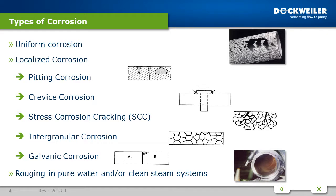The second type is crevice corrosion, which also occurs in neutral and acidic chloride solutions. The attack starts more easily in narrow crevices than on unshielded surfaces. So everywhere where you have a flange joint or something similar, this could happen in chloride-containing solutions.